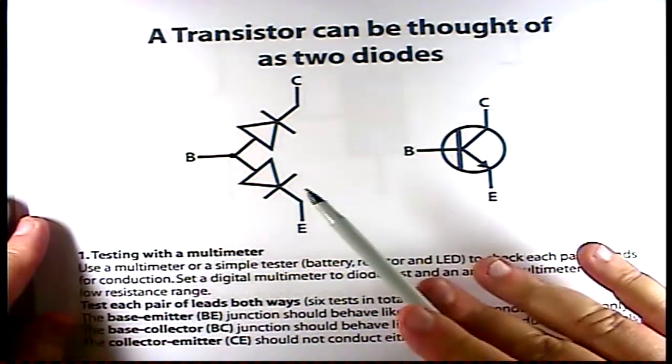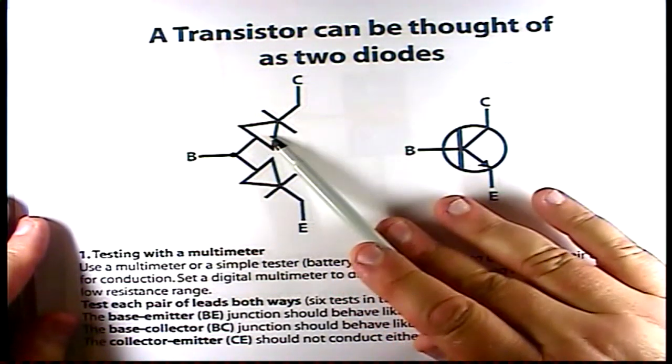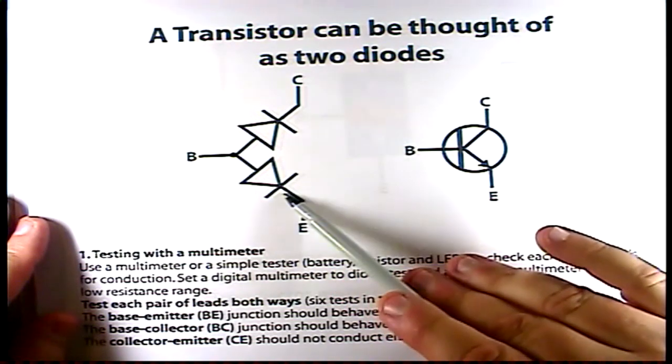One thing I like to think about a transistor is thinking about it as two diodes. Now, the thing about a transistor is you can't just stick two diodes together and make a transistor, because there's a magic that occurs with the way the dopants are used and the size of the regions to allow the amplification to happen. But when you're testing a transistor, you can think of it as two diodes. I've got two diodes here — connected with a collector, a base, and an emitter — and they match up with this transistor over here.